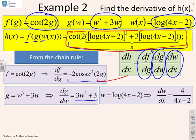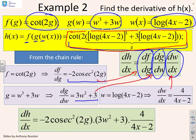Now all I have to do is plug these answers into this formula, thus avoiding any difficult computation at any time. So dh/dx is minus 2 cosec squared 2g times 3w squared plus 3 times 4 over 4x minus 2. Obviously, if you want it all in terms of x, I happen to know what w is. It's there. So I take that expression and put it in there. But hopefully you will see that the final expression in terms of x really will be quite messy.